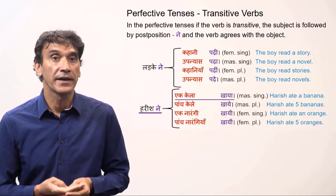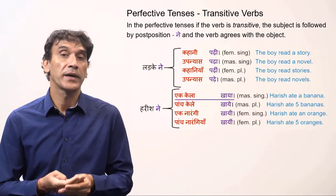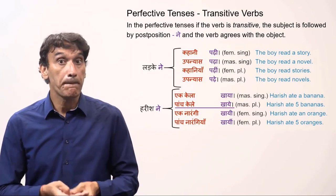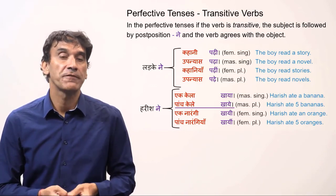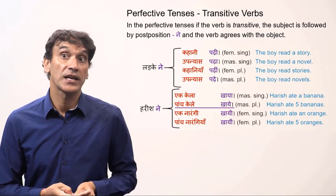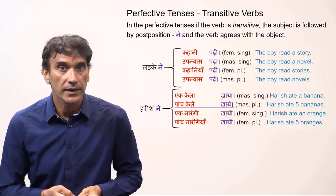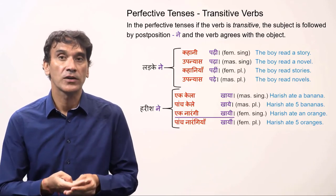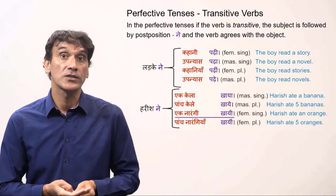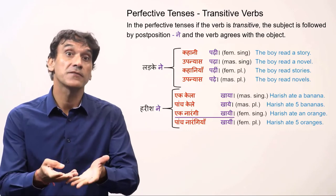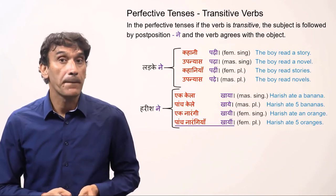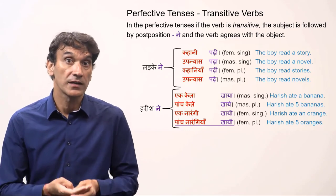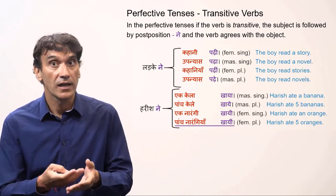Harish ne ek kela khaya — Harish ate a banana. 'Ek kela' (one banana) is masculine singular, so the verb is 'khaya'. Harish ne paanch kele khaye — Harish ate five bananas, so the verb is 'khaye'. Harish ne ek narangi khayi — Harish ate an orange. 'Narangi' is feminine, so the verb is 'khayi'. Harish ne paanch narangiyan khayin — Harish ate five oranges, so the verb is 'khayin'.